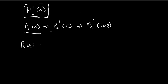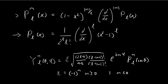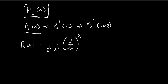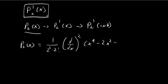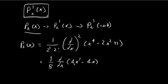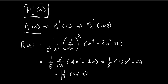Expanding (x²−1)² gives x⁴ − 2x² + 1. The prefactor is 1 over (4 × 2) = 1/8. Differentiating once gives 4x³ − 4x. Differentiating again gives 12x² − 4. Canceling factors of 4 from numerator and denominator and simplifying, we get P₂(x) = (1/2)(3x² − 1). This is the Legendre polynomial P₂(x).